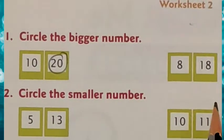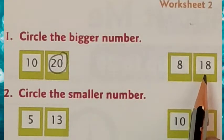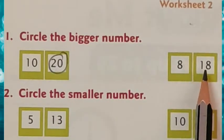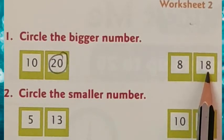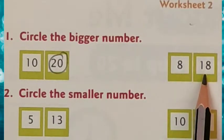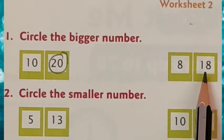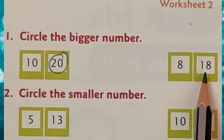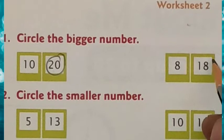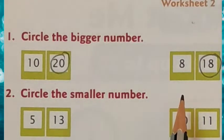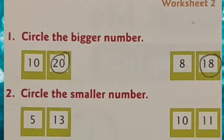Next: 8 and 18. Now here, you observe — 8 is a one digit number and 18 is a two digit number. When we compare a one digit number and a two digit number, the two digit number is always bigger than the one digit number. So here, 18 is bigger than 8. Circle 18.